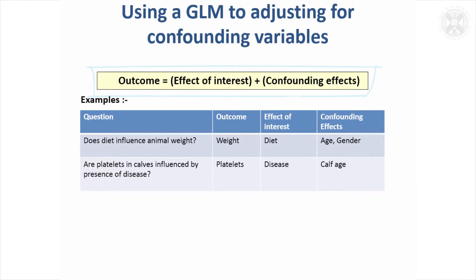For example, if you were looking at the influence of diet on animal weight, the effect of interest is diet, so that would be fitted as a factor in the model. But of course, if you've got animals that have got different ages, different genders, that's going to very much affect weight. And unless they're completely balanced between the two diet groups, it might bias your results.